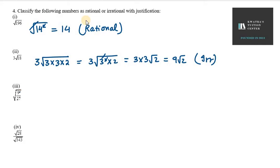Next is 9 over √27. The 9 and 27 can be reduced, so we get 1/√3, which is an irrational number because we cannot simplify it further.